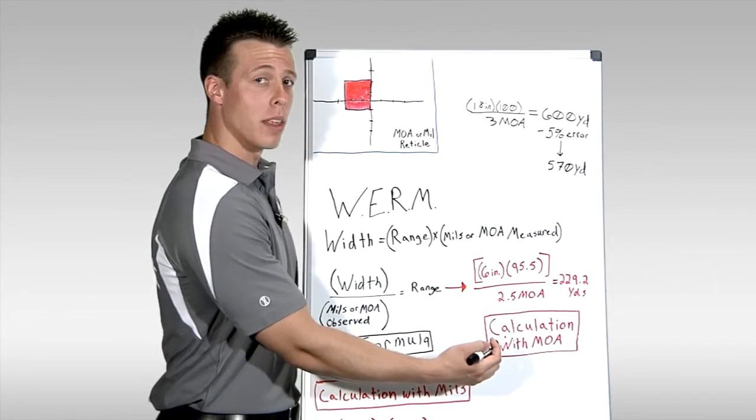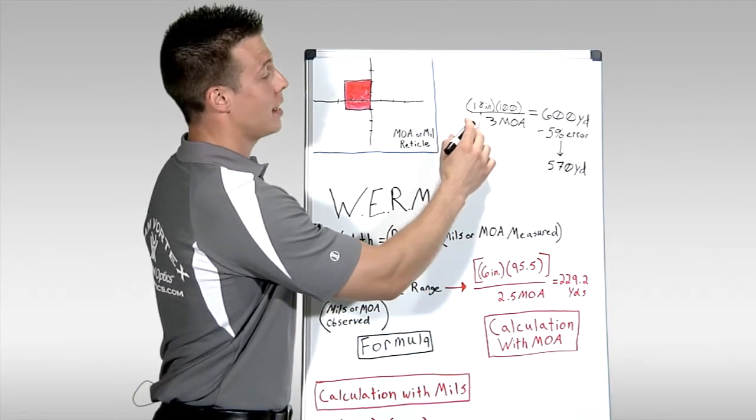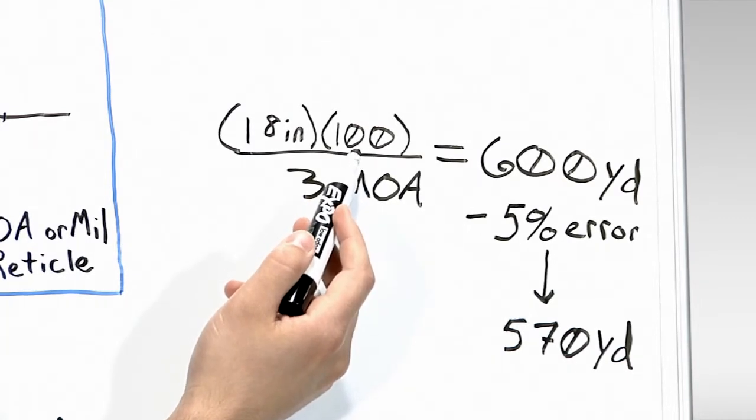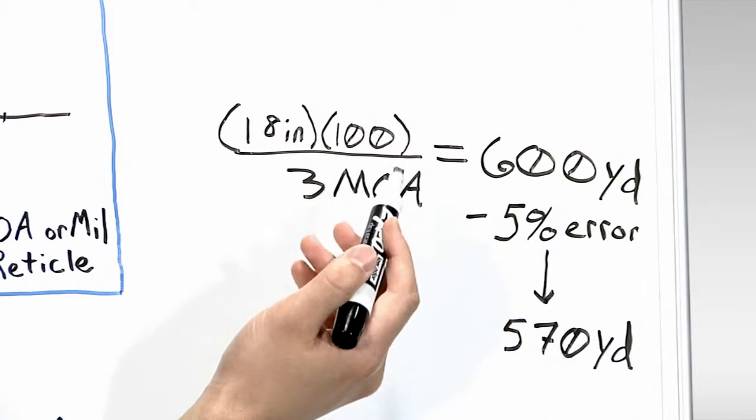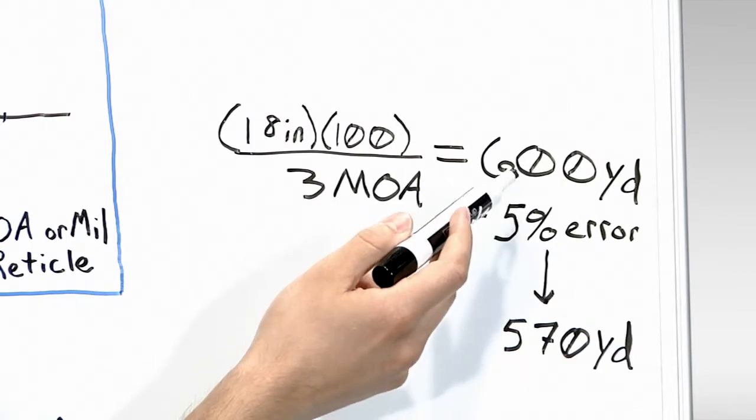So let me show you what I mean by that. Let's take a different example. In this case, we're measuring a target that is 18 inches wide, and we use 100 instead of 95.5 to save time for the sake of simplicity. We'll divide this by 3 MOA, because in this case we'll say our target fills out that much, and then we'll get a value of 600.